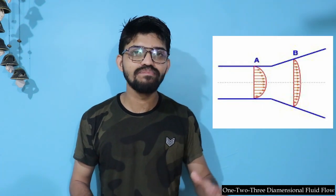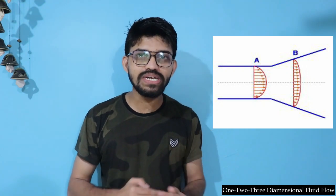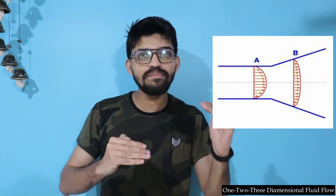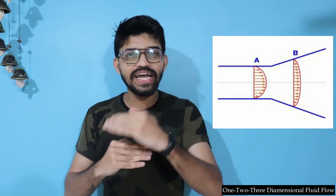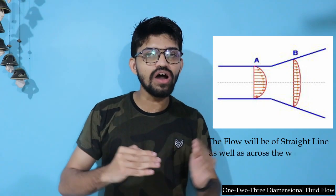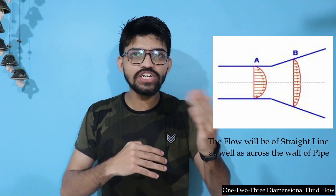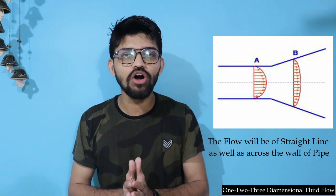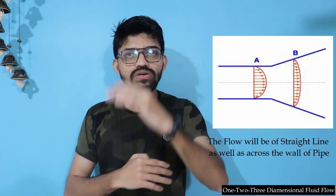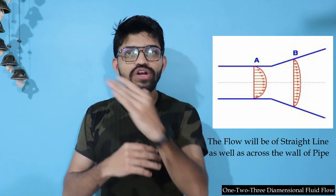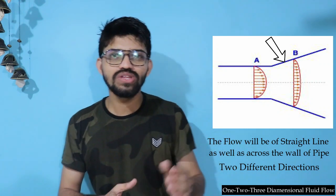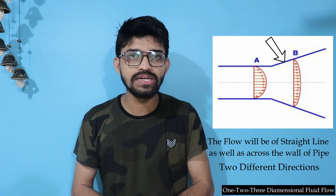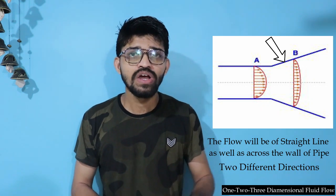In the tapered pipe example, fluid flows in a straight line along the centerline and also along the varying boundary walls. This introduces two directions — the x-direction along the centerline and the y-direction along the pipe wall — so that particular flow is considered a two-dimensional fluid flow.